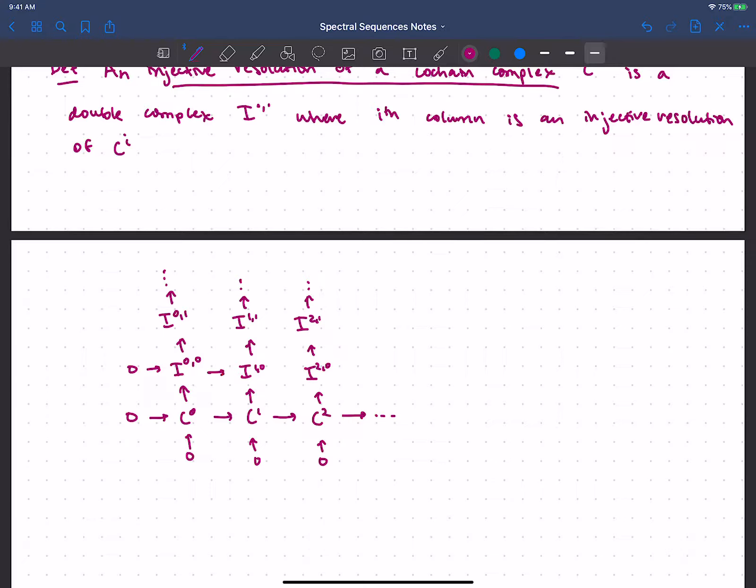But I also want this to be a double complex. So I should have horizontal maps. And again, my squares anticommute. And here the columns are exact because these are injective resolutions of each of the CI.